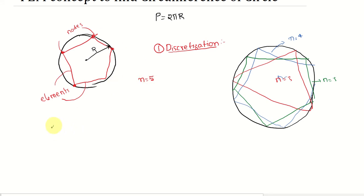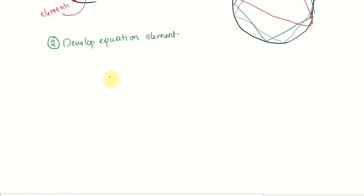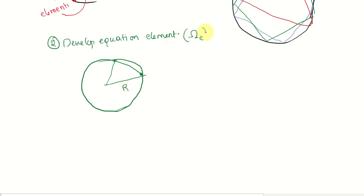The second step is to develop the equation. FEM is a numerical process, so we develop numerical equations for a single element. Let us isolate one element from the circle. The element is called ωE, and the angle subtended by this element is θE.